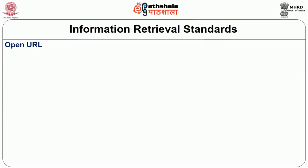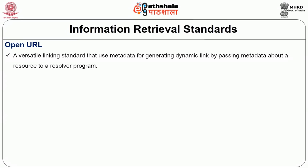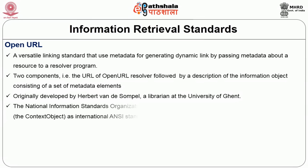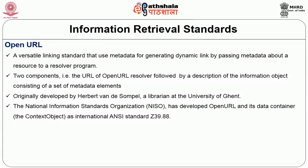Open URL is a versatile linking standard. A URL is a Universal Resource Locator — an address such as http://www.inflibnet.ac.in. Open URL uses metadata for generating dynamic links and passing metadata about a resource to a resolver program. It has two components: the URL of the Open URL resolver, followed by a description of the information object consisting of a set of metadata elements. Open URL was developed by Herbert Van de Sompel, a librarian at the University of Ghent, and NISO has standardized it as Z39.88.